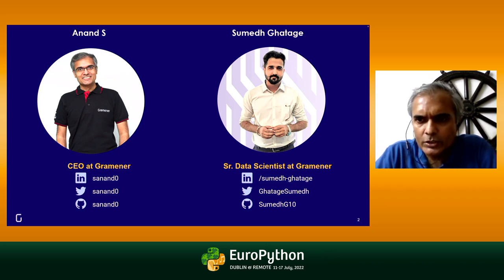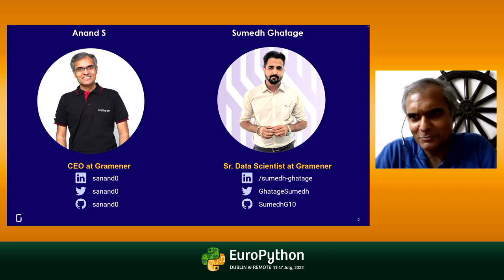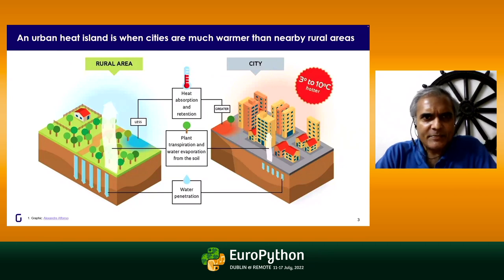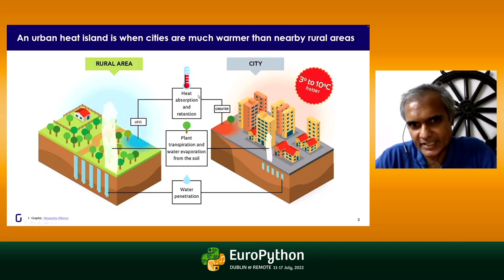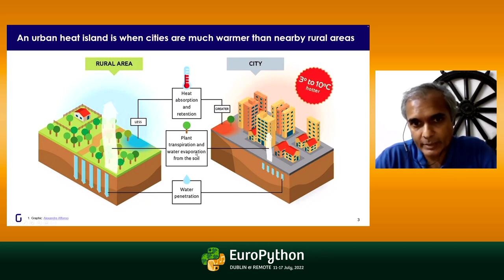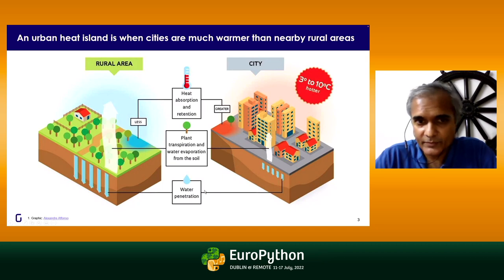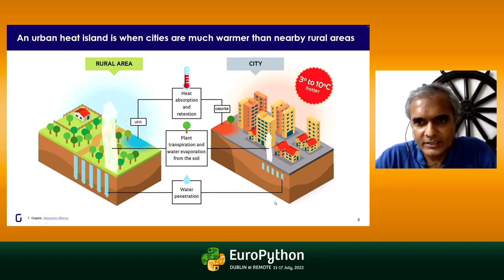Let me explain the context: what is the need to predict heat islands, and how Python can help. A heat island is when a portion of a city is much warmer than nearby areas. In urban areas, we have higher heat absorption and retention. Transpiration from plants and water evaporation from soil can cool the environment, but both are absent when there's more concrete on the ground, leaving far less water in surface soil than in rural areas.